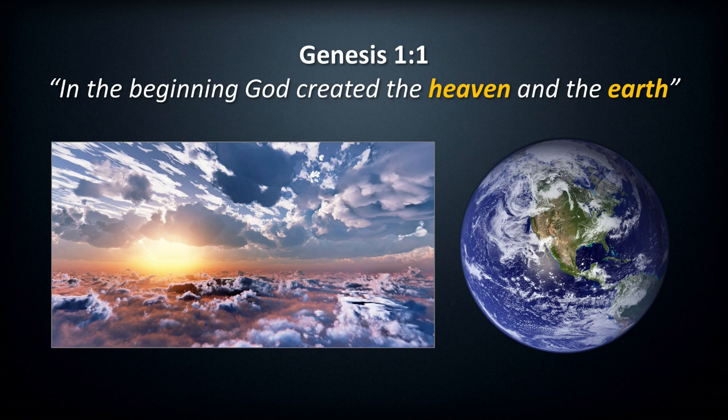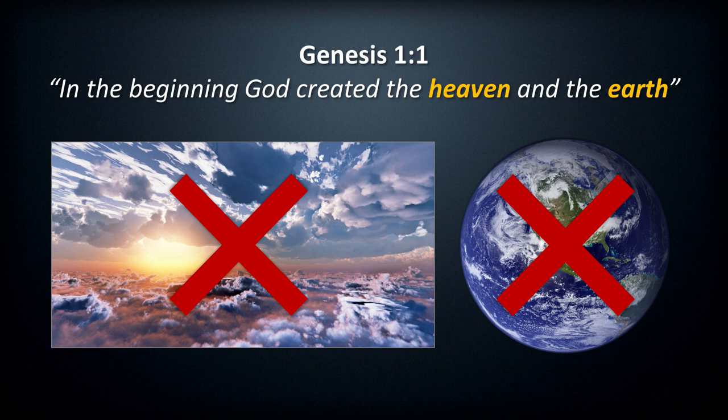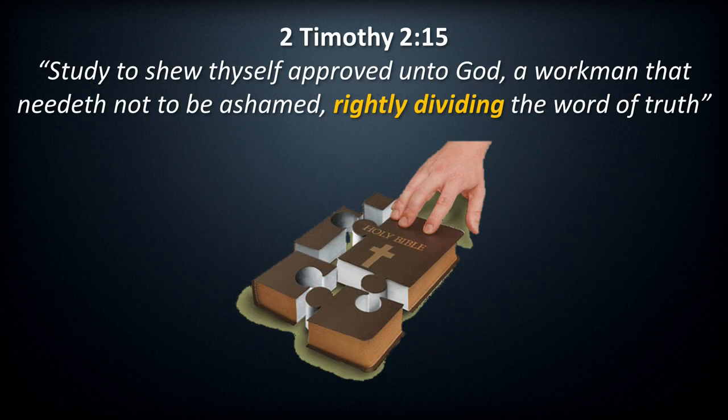In the beginning, God created the heaven and the earth — Genesis 1:1. Seems simple enough. We know what heaven is and we know what earth is, right? Wrong. The Bible is its own dictionary and its own thesaurus. In order to truly comprehend what scripture is trying to communicate to us, we must toss aside our preconceived notions and let the Bible define what words truly mean. Study to show thyself approved unto God, a workman that needeth not to be ashamed, rightly dividing the word of truth — 2 Timothy 2:15. The Bible is like a jigsaw puzzle; the pieces or verses are scattered throughout its pages and it is up to us to find them all and put them together in the proper order.